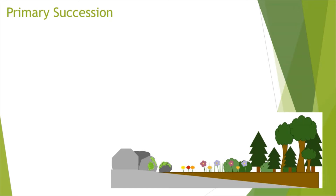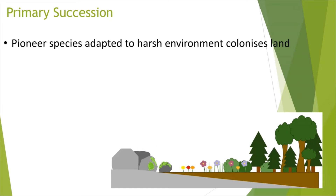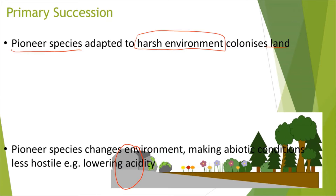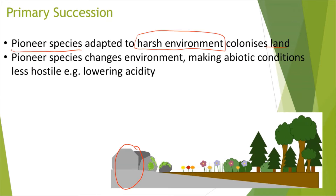Starting off with primary succession. What happens first is that the pioneer species, which are adapted to the harsh environment, colonise the land. You have a new land formed, and pioneer species, which are really adapted to live in the harsh conditions of the new land, colonise that land. They will colonise the land and the pioneer species would change the environment, changing the abiotic conditions, which would in turn make the conditions less hostile.